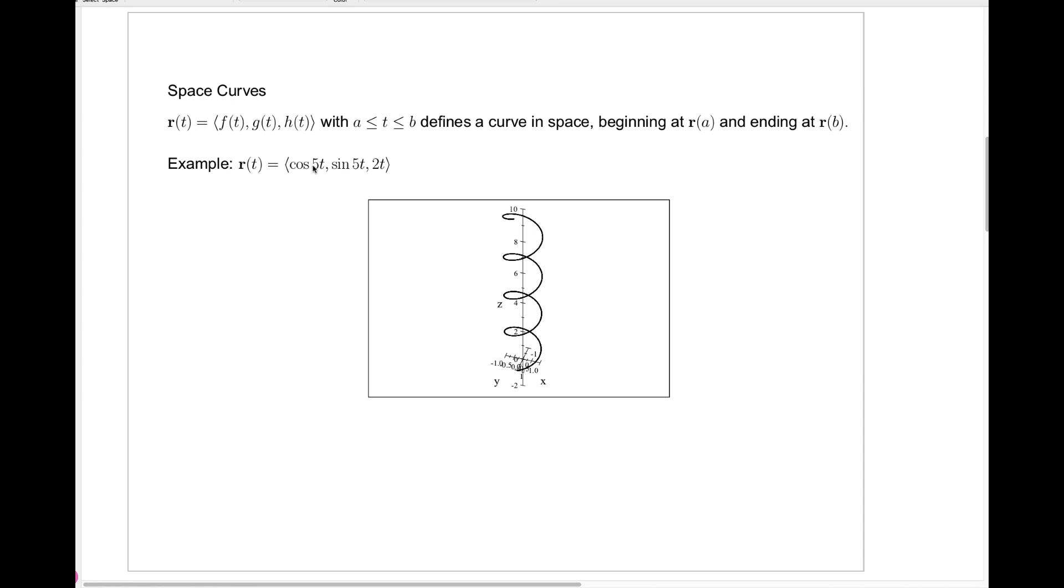So for example, when we have r of t is cosine 5t, sine 5t, and 2t, when t equals 0, we'll have r of 0 equals 1, 0, 0, and that's exactly this vector like that. This is the x-axis coming down here to the left. This is actually the y-axis going in the direction towards the right, and the z-axis is our vertical axis. So the vector 1, 0, 0 is this vector, and when we say the curve starts at that vector, we mean at the point at the head of that vector right there.